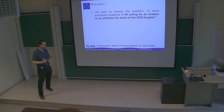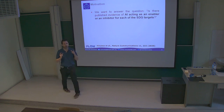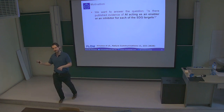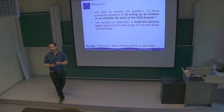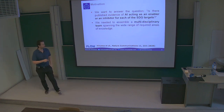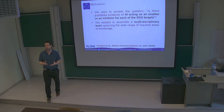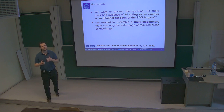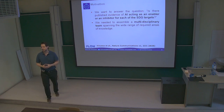What we wanted to do was answer the question of whether there is published evidence on what AI can do positively, but also negatively, to achieve each of the 169 targets of the SDGs. To do that, we assembled a multidisciplinary team so we could really tackle all these areas and have a thorough discussion. This is what we call an expert elicitation process, allowing us to analyze complementary views.